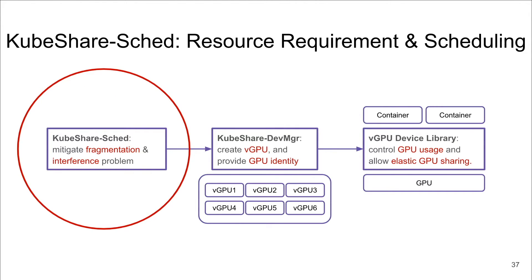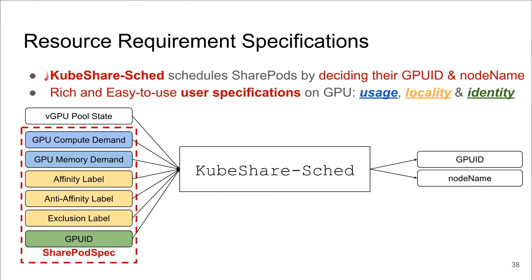Next, we explain what resource requirements users can specify and how KubeShare schedules GPU resources accordingly. The KubeShare scheduler schedules pending shared pod requests by deciding their GPU ID assignment based on user resource requirements. KubeShare provides rich and easy-to-use specifications for users to specify requirements on GPU allocations in terms of resource usage, scheduling locality, and GPU identity.